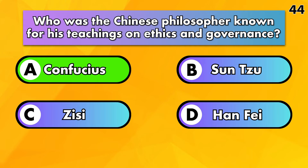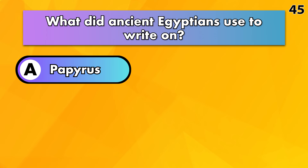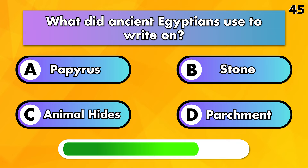What did ancient Egyptians use to write on? Papyrus, stone, animal hides or parchment? The answer is Papyrus.